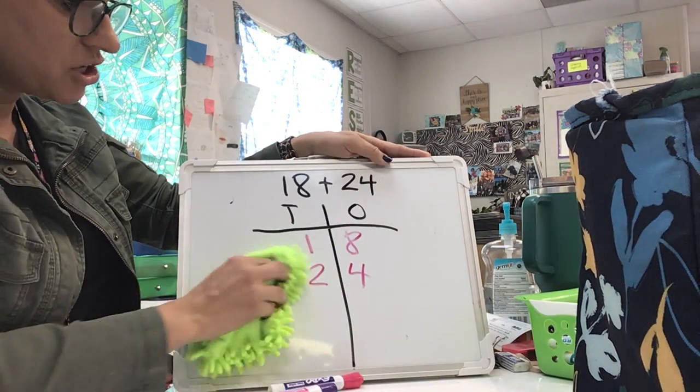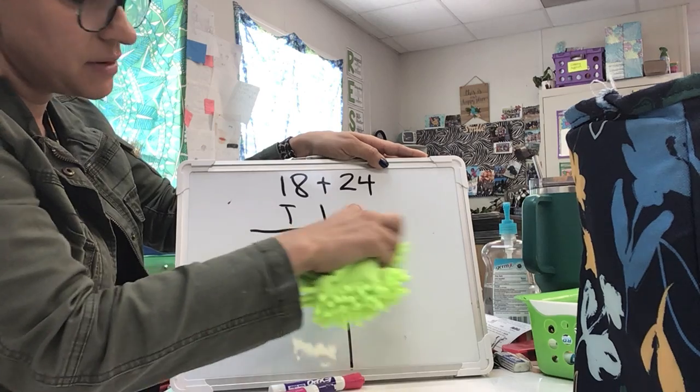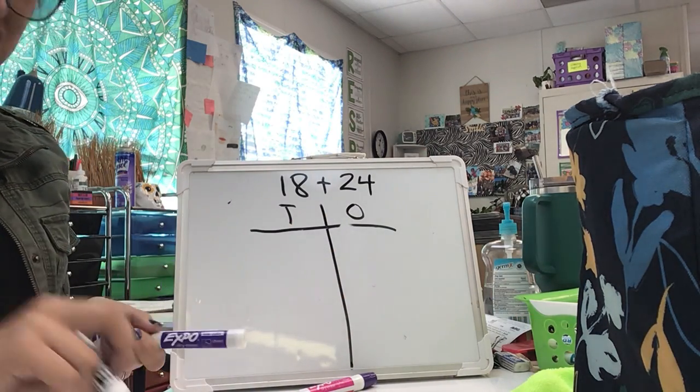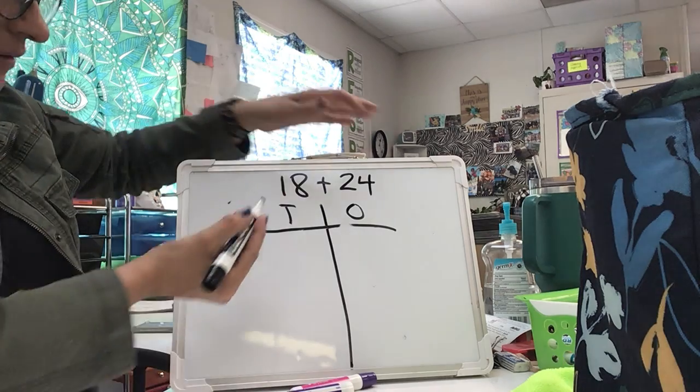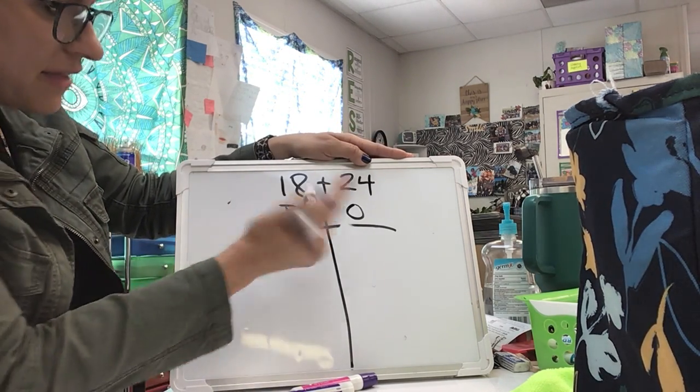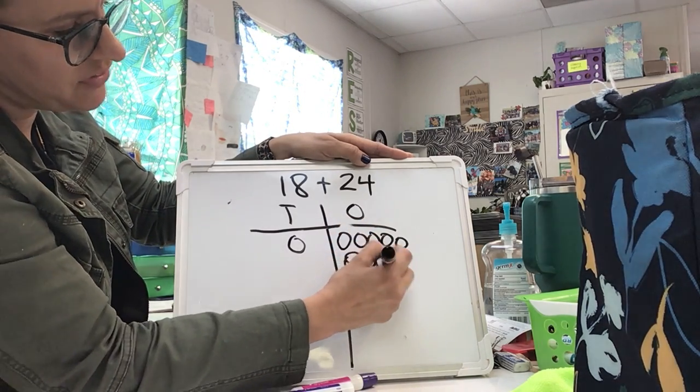When I'm doing a place value chart, I'm using place value chips. Sometimes people might use other things. I like to use circles. It just makes it a little bit easier. I'm going to put one in my tens, so I've got one circle. And then in my ones place, I'm going to put eight place value chips.